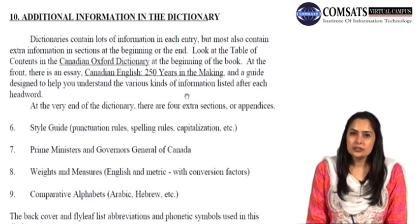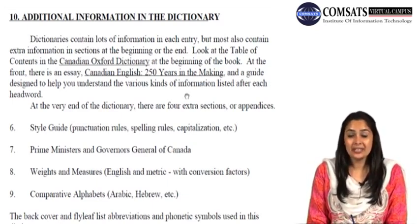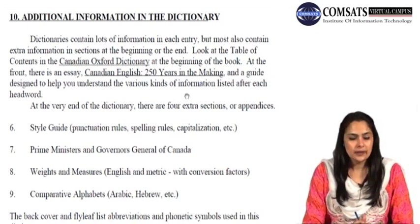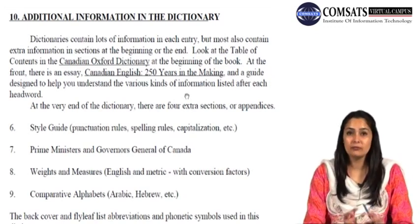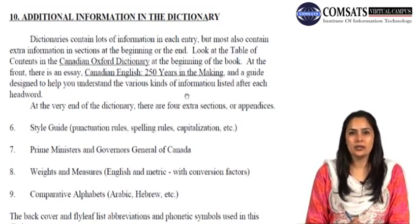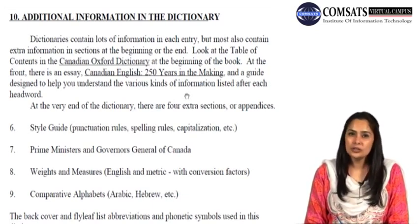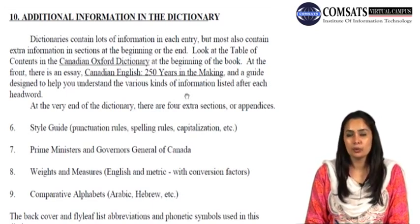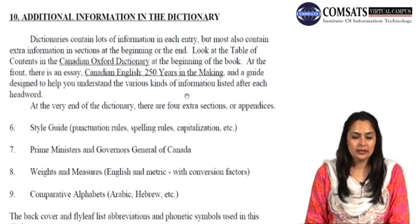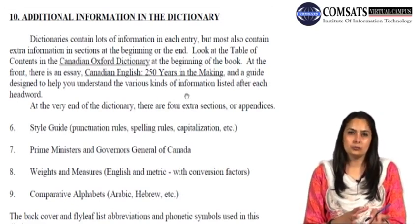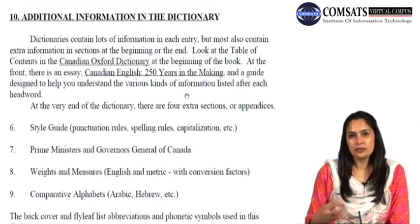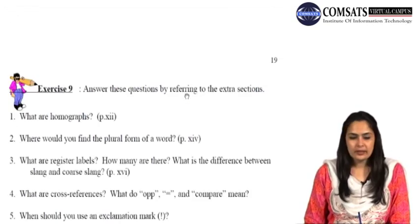There are other additional entries in a dictionary as well — entry number 10. This additional information includes a style guide, punctuation rules, spelling rules, and capitalization. There are also lists of prime ministers and governors, flags in some dictionaries, capitals of important countries, languages, and currencies. Weights and measures — almost all dictionaries all over the world have this information because it's very important. We also have a comparative alphabet section — Arabic, Hebrew, etc. — and some of these origins are sometimes written in a different language as well. You can practice exercise 9 and find the answers.